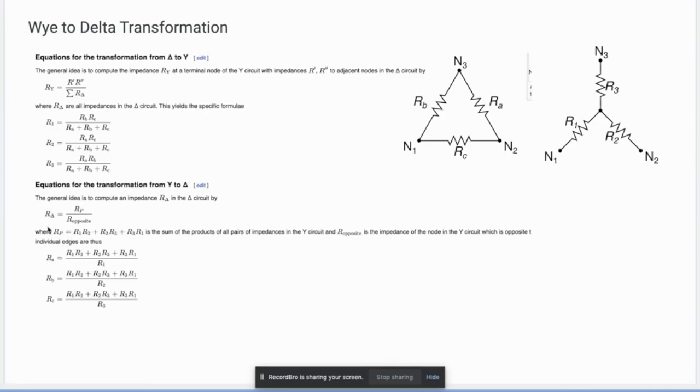While if you want to know the resistor equivalent in delta, you want R8, that should be the sum of alternating product over the R opposite. That is for you to get the R of Y, it will be equal to the product of the adjacent resistor divided by the sum of all the resistors.